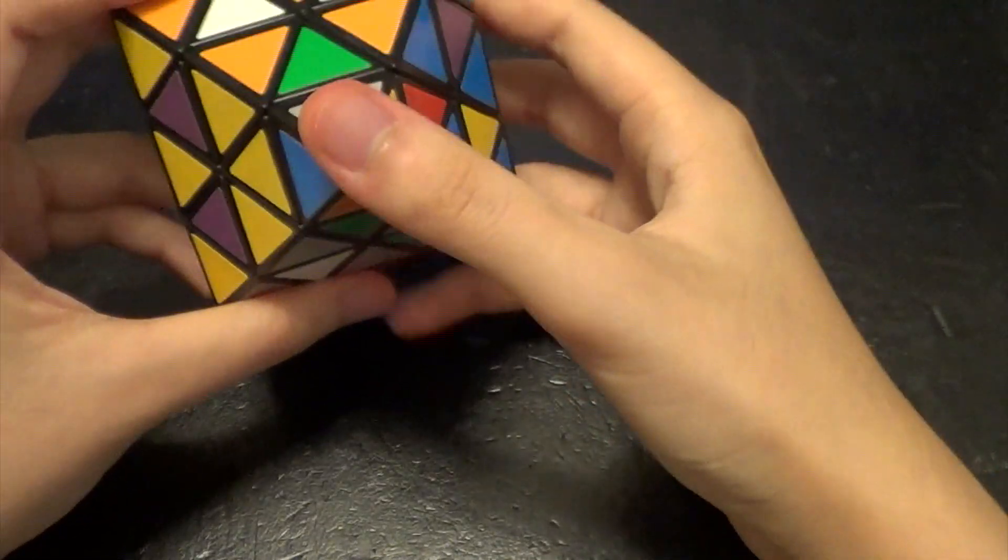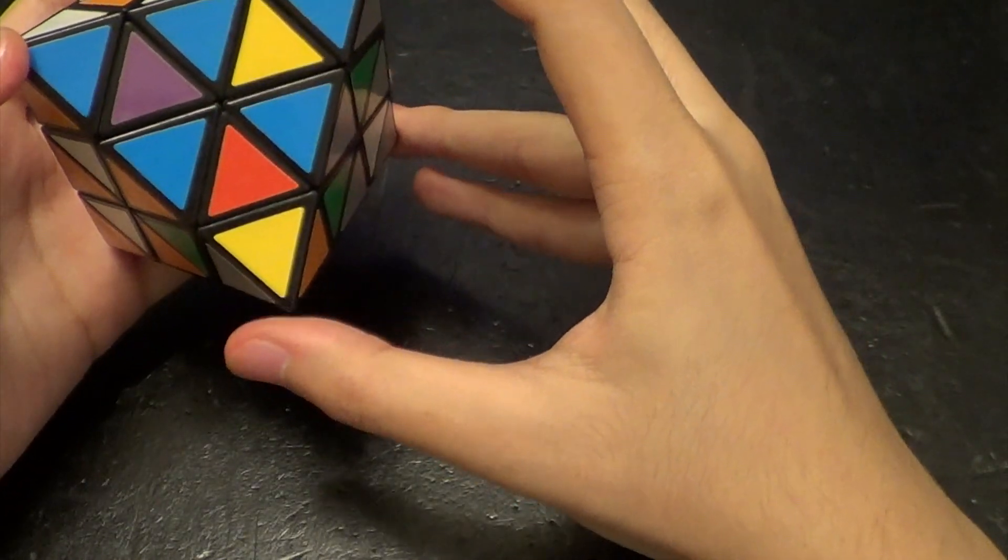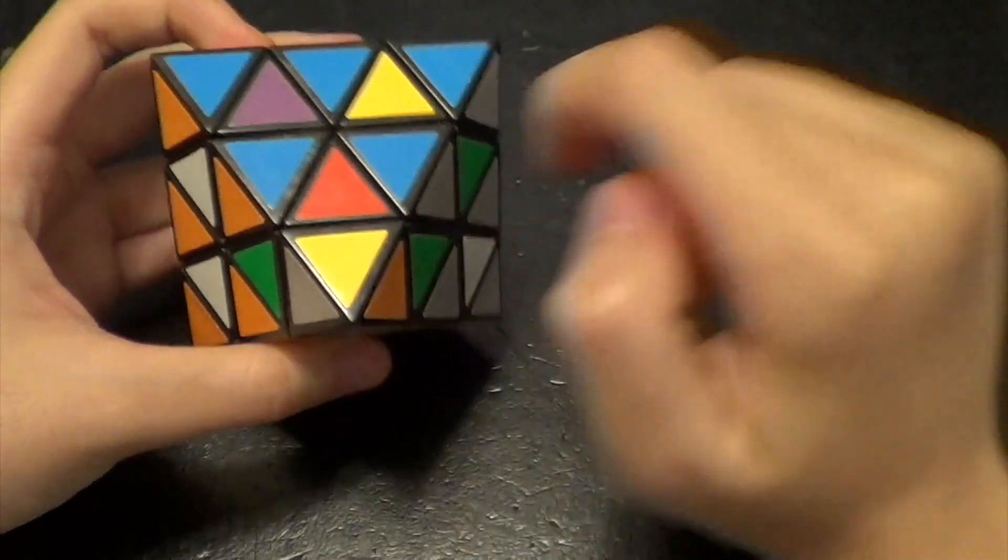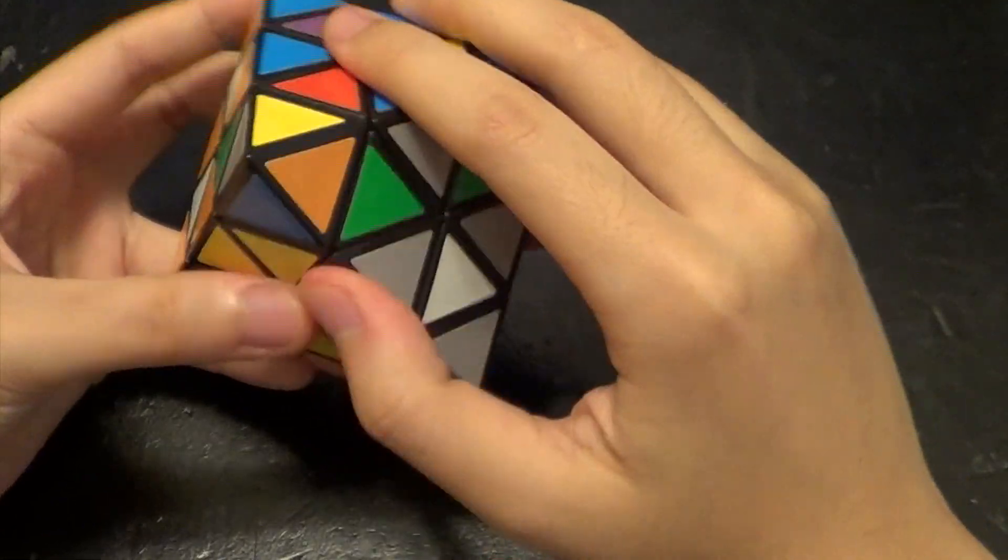So essentially just with that one sequence of four moves, you can just place all of the different corners in their correct placements.